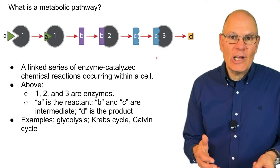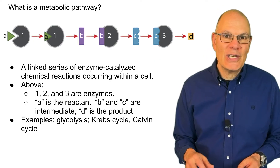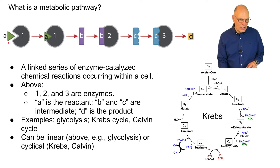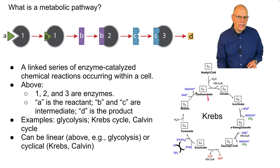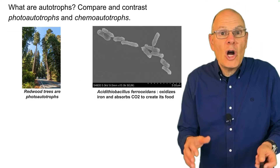Examples of metabolic reactions to know well include glycolysis, the Krebs cycle, and the Calvin cycle, all of which we'll deal with in this unit. These reactions can be linear — glycolysis is a linear reaction with a beginning point and an end point — or they can be cyclical, like the Krebs cycle and the Calvin cycle. In the Krebs cycle, oxaloacetate is both the beginning and ending compound, and a similar thing happens in the Calvin cycle.